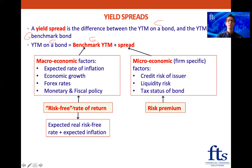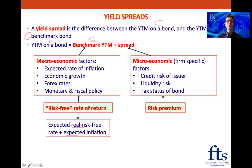Of course, the bonds do have interest rate risk, because as we've seen, when yields change the prices change, but there's no default risk. Why? Because if we think back to the previous reading, when we looked at government bonds — we called them sovereign bonds — we said they don't have default risk because the government can always raise taxes, or if worse comes to worst, they can print money to pay back the bonds. Another way to look at it is we take the expected real risk-free rate — that's the rate after inflation — and if we add the real rate plus the expected inflation, that's another way to get that risk-free rate of return.